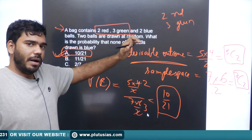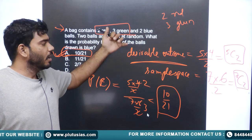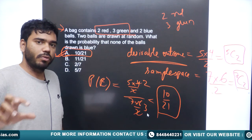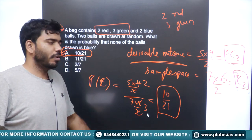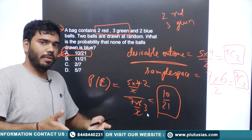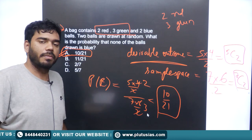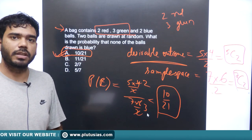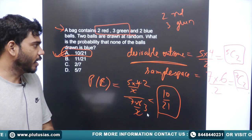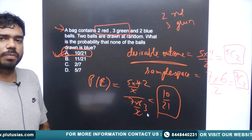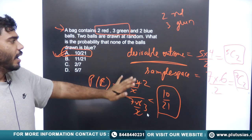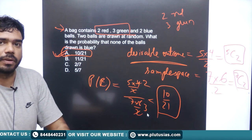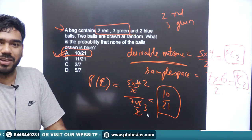The only tricky part in probability is applying permutation and combination to calculate the number of possible ways — desirable outcomes and total sample space. Other than that, probability is a very simple topic and lots of questions have been asked continuously from it. Thank you.